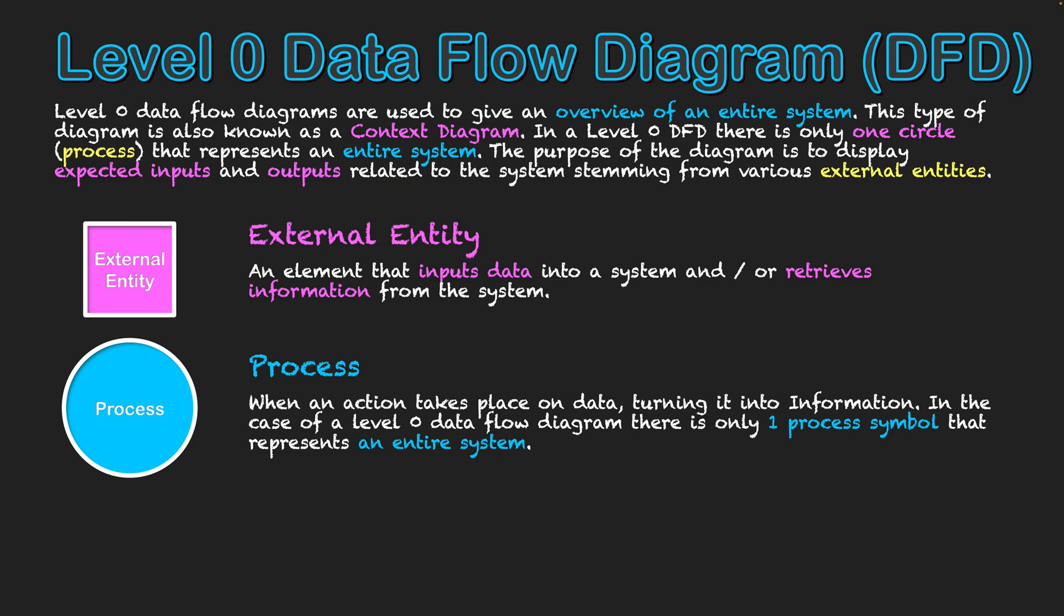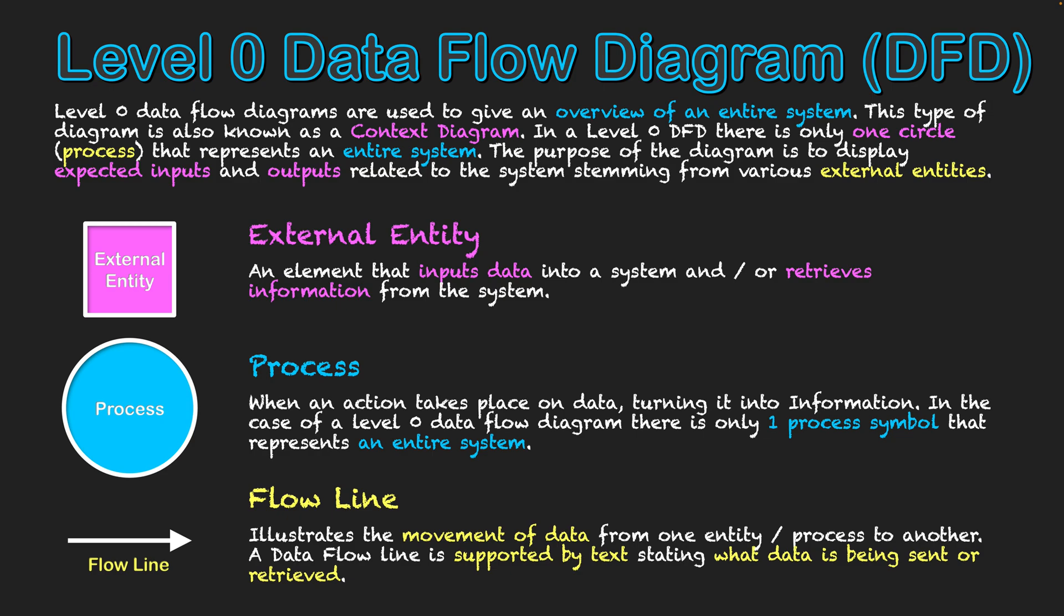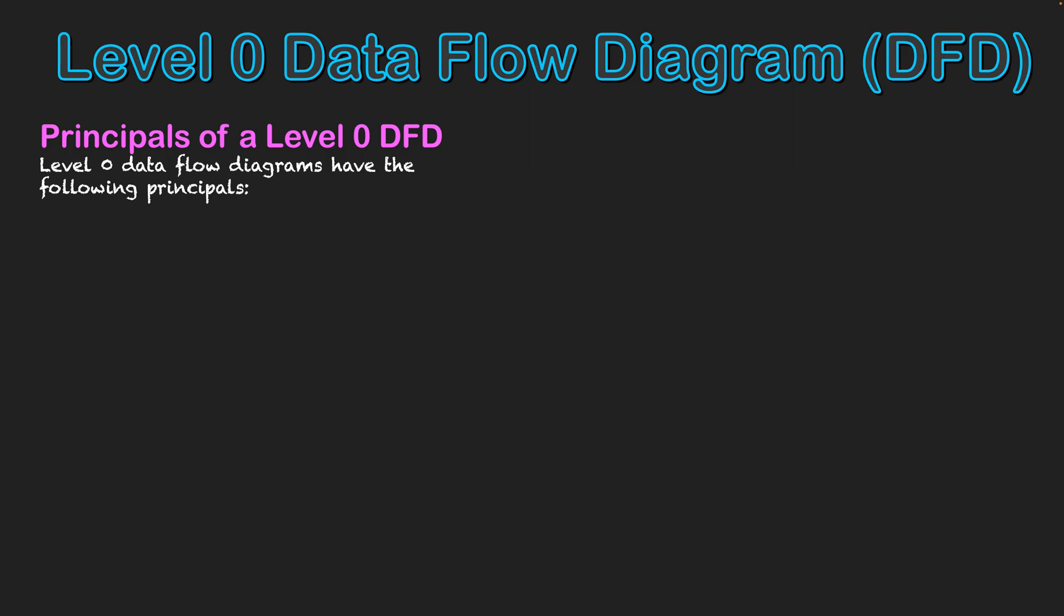Now, how do we know what's interacting with the system and what's happening? Well, we use flow lines. Flow lines are lines going in and out of the system showing the movement of data. Essentially, it's showing at this level what an external entity puts into a system, and then an arrow usually coming out of the system to the external entity or to another external entity as information for their use. These lines are often accompanied by text reflecting the data going into the system or out of the system to and from external entities.